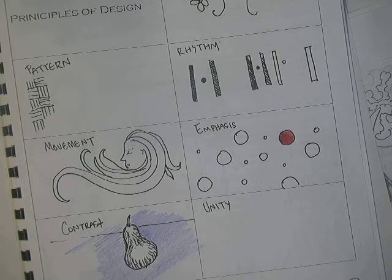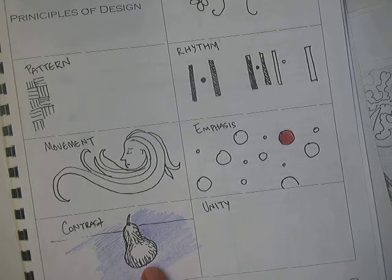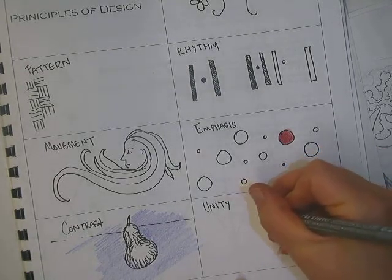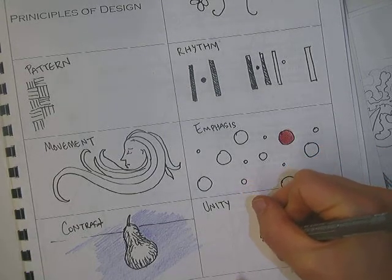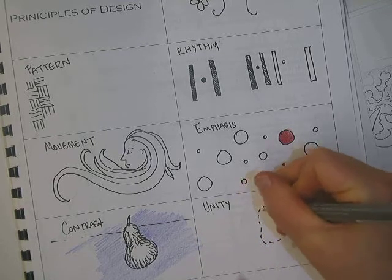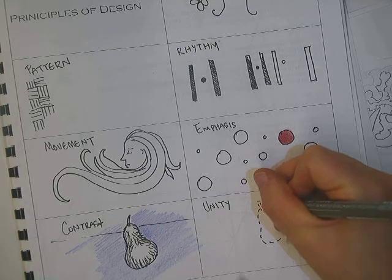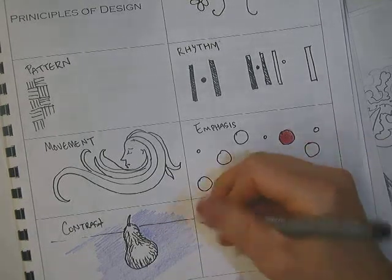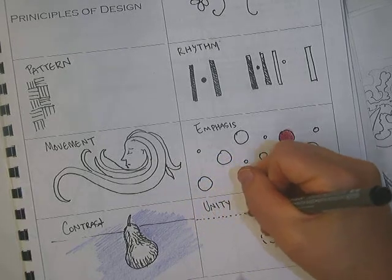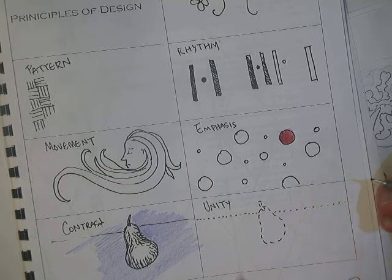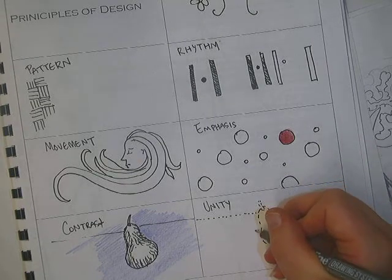Okay. And last one is unity or harmony. So unity is where something is consistently the same throughout the entire thing. Like, let's say, I'm going to draw another pear for the heck of it. And let's say I draw the pear using just dashed lines and only dashed lines. So that's what's unifying it.